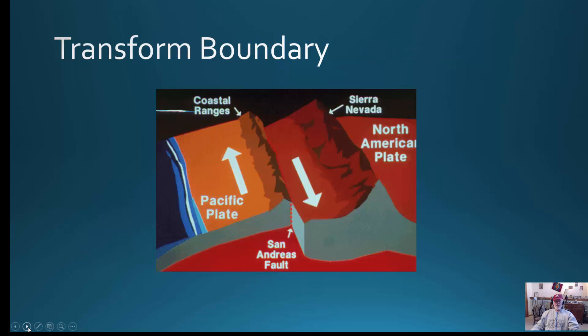The other type of boundary we had was a transform boundary. A good example is the San Andreas Fault with the North American and Pacific plates. Here the two plates are sliding against one another — there's no subduction going on, no collision, they're just sliding past one another. We'll look at the San Andreas Fault more when we start looking at volcanoes and earthquakes.